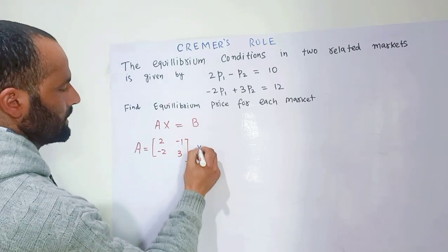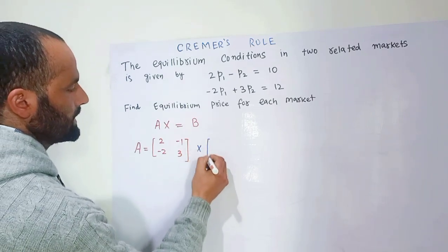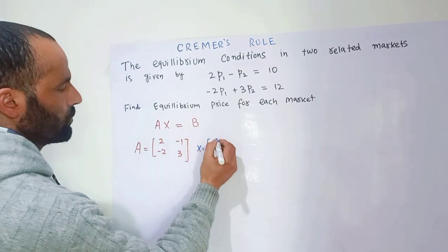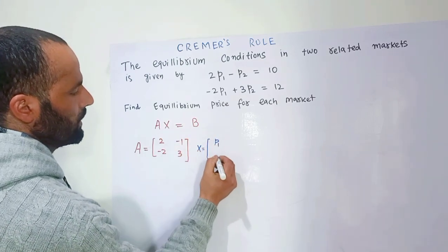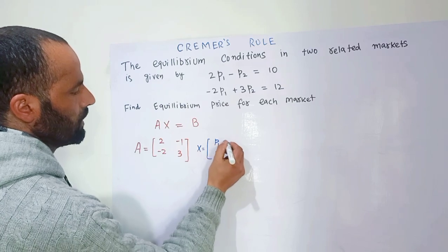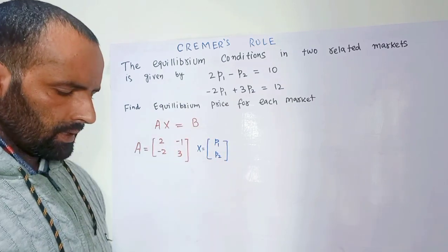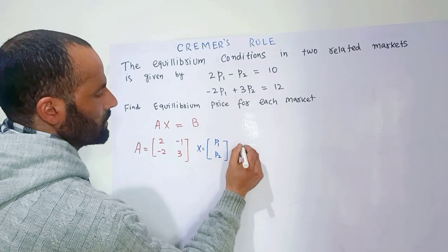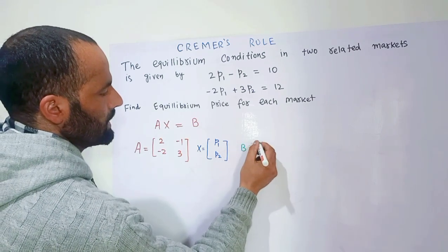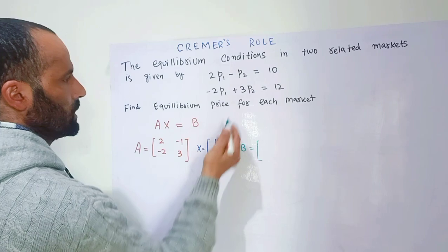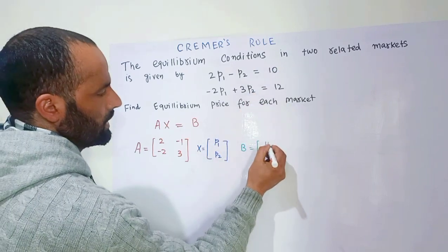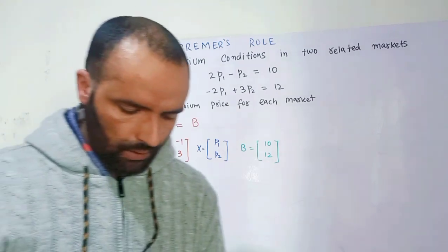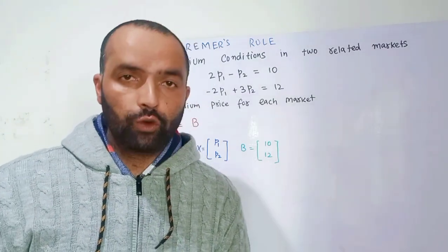X is the solution vector that we want to find — that is, the values of p1 and p2. B denotes the vector of constant terms, which is given as 10 and 12. We need to find the equilibrium values of p1 and p2.